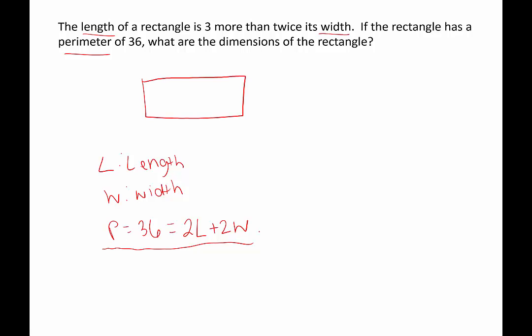In that first sentence, the length of the rectangle is three more than twice its width. So three more than implies something plus three, and twice its width would be two times W. So the length is two times W plus three, which I'll put here, 2W plus 3. And the width is W.